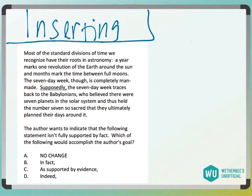This is more of a reading comp question. We want to know what the author wants to do — they want to indicate that the following statement isn't fully supported by fact. Which of the following would accomplish the author's goal? You probably don't even have to read all the surrounding text because the question stem is telling you exactly what you want.